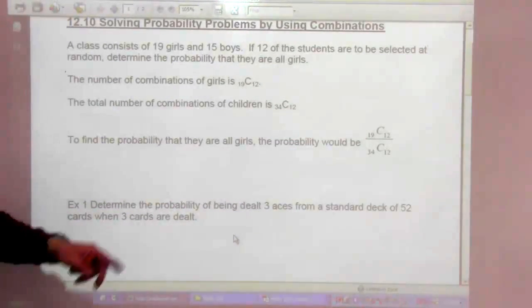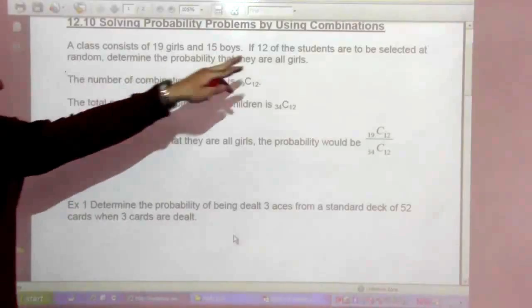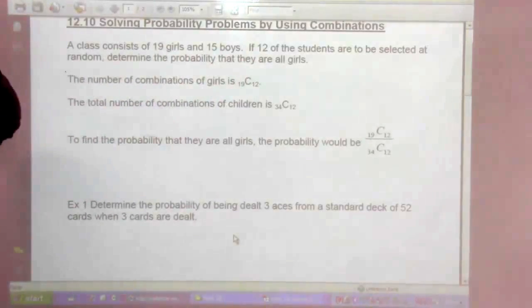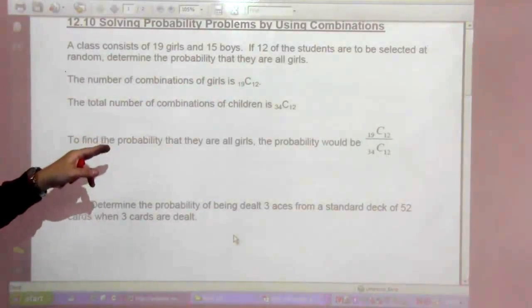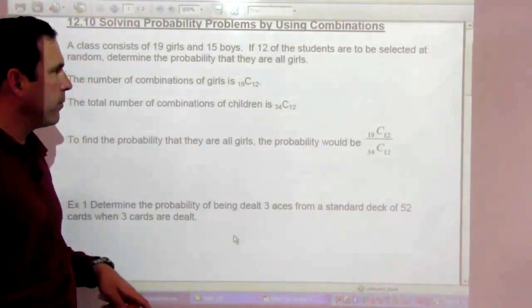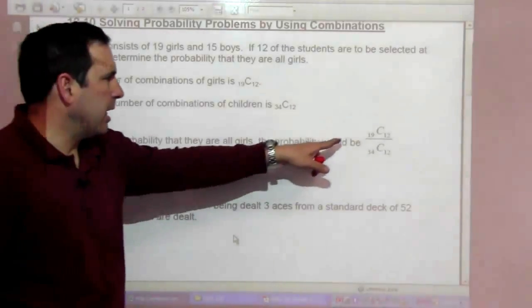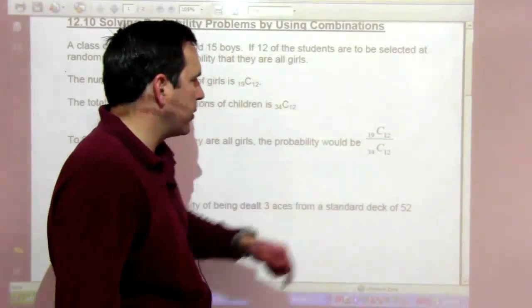So in this, the number of combinations of girls is 19 choose 12, because we're choosing 12 out of the 19. And the total number of combinations for children would be 34 choose 12. So to find the probability that they are all girls would be 19 choose 12 over 34 choose 12.